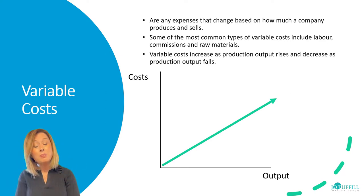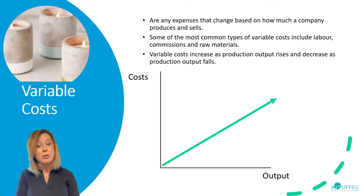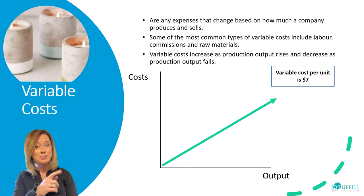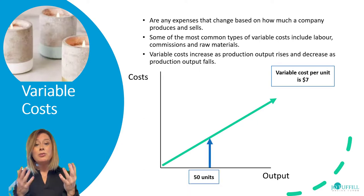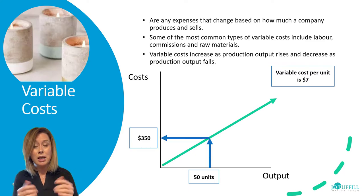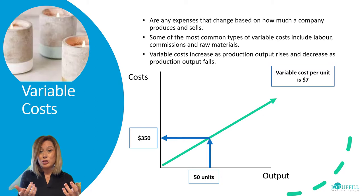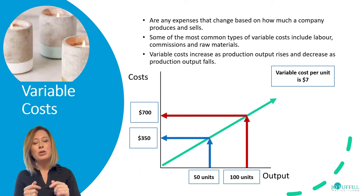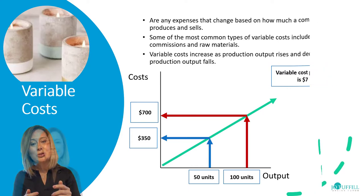Let's suppose our company makes candles and the variable cost per unit is $7. If you make 50 units, 50 times 7 is going to be $350. And if you make 100 units, 100 times 7 is going to be $700. So as output goes up, so do costs.